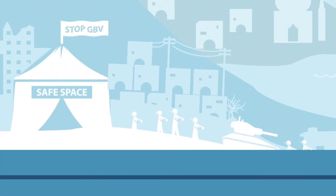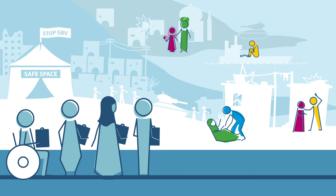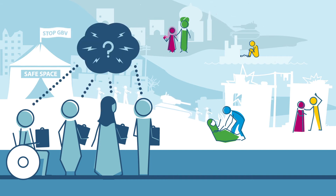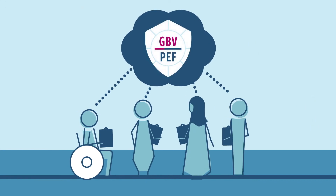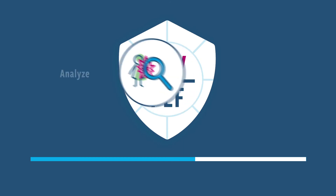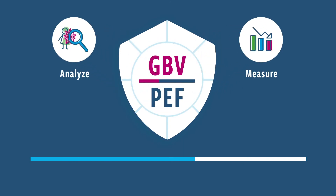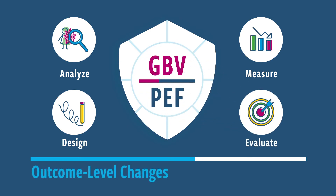A significant challenge humanitarians face is that programs are not designed in a way to measure GBV prevention. Developed by and for humanitarians, the Framework provides guidance for improving how we analyze and measure GBV risk patterns and design GBV prevention programs from the experience of affected populations. This will allow us to evaluate outcome-level changes that demonstrate the prevention of GBV.